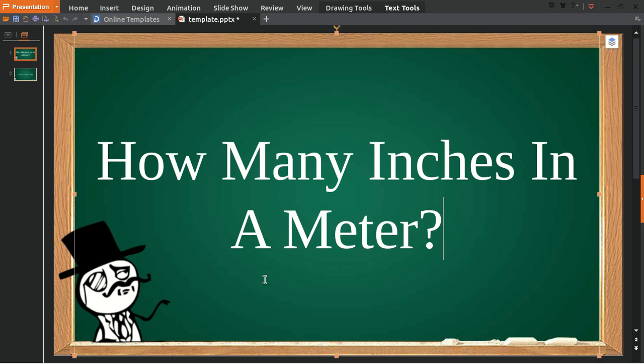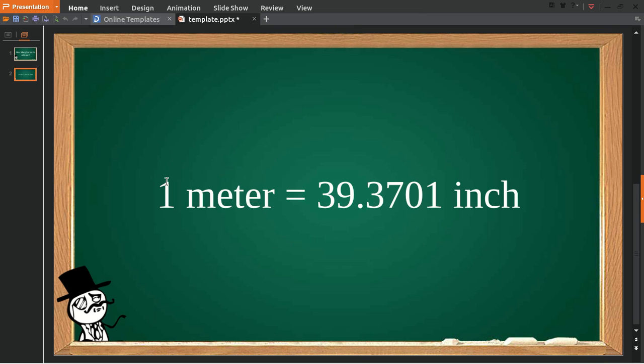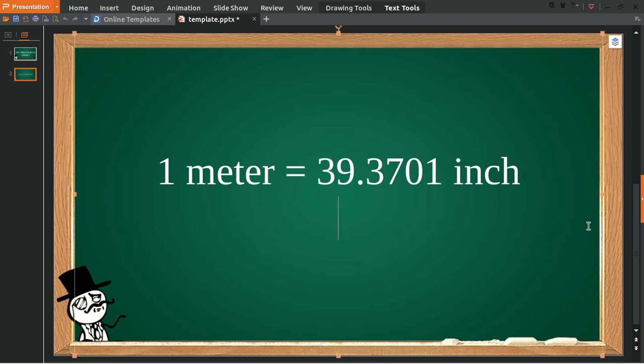I'll provide you with the answer. One meter is equal to 39.3701 inches. Now, in case someone asks you how many inches are in 10 meters...